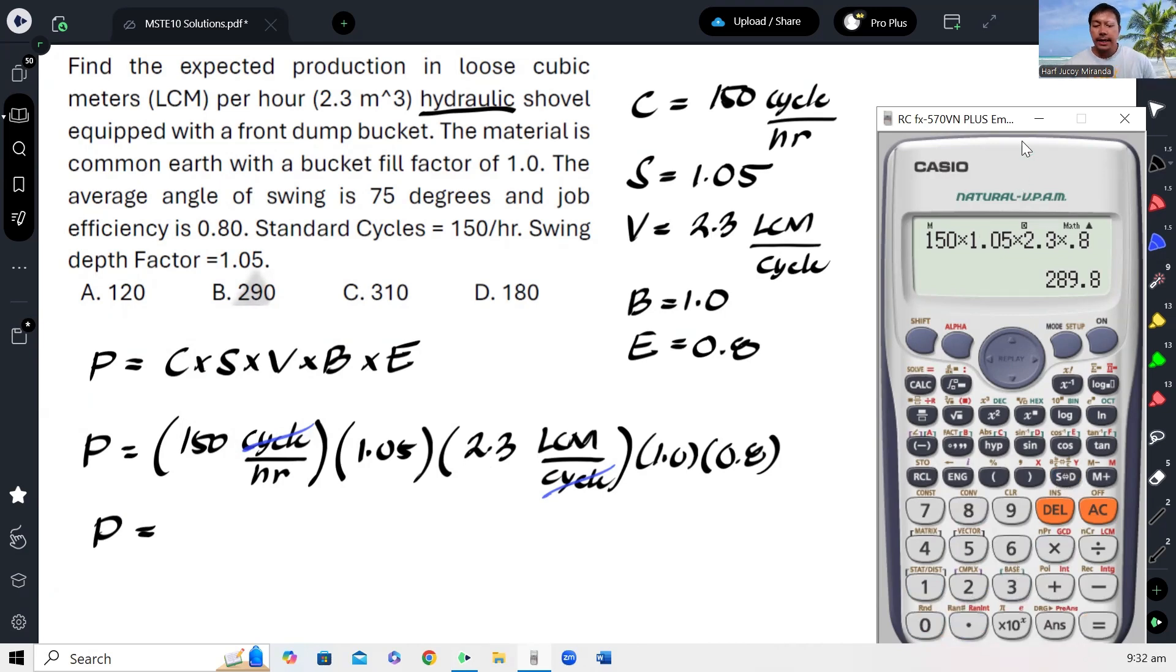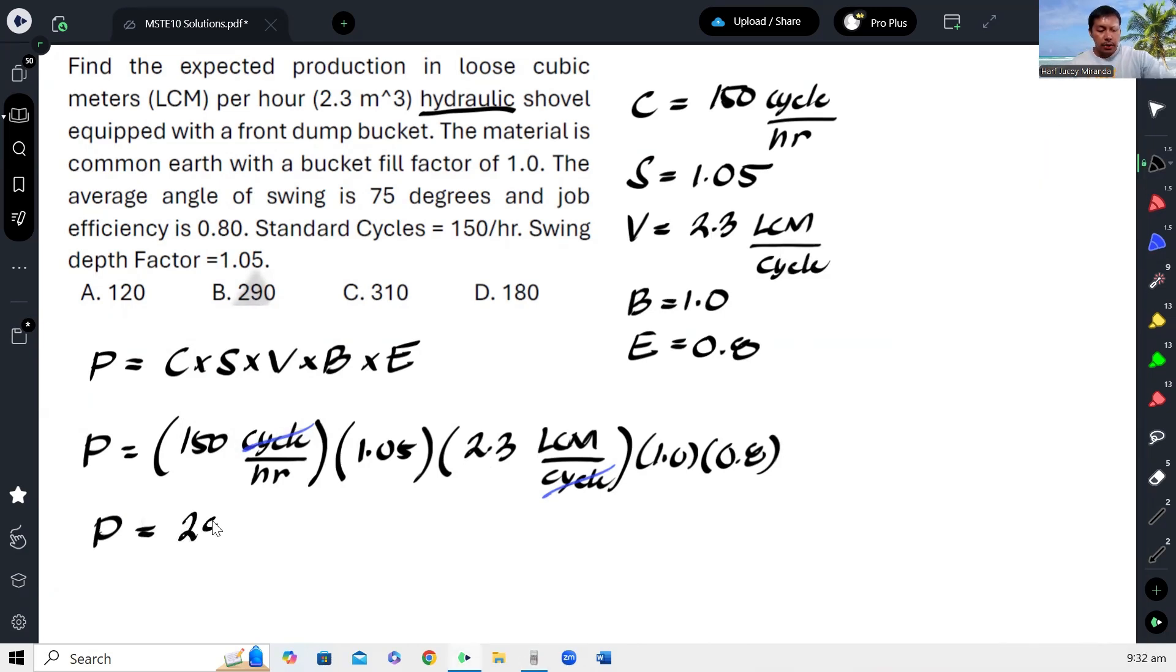And this gives us 289.8 loose cubic meter per hour. And that's our answer. So in the choices, we can accept letter B.